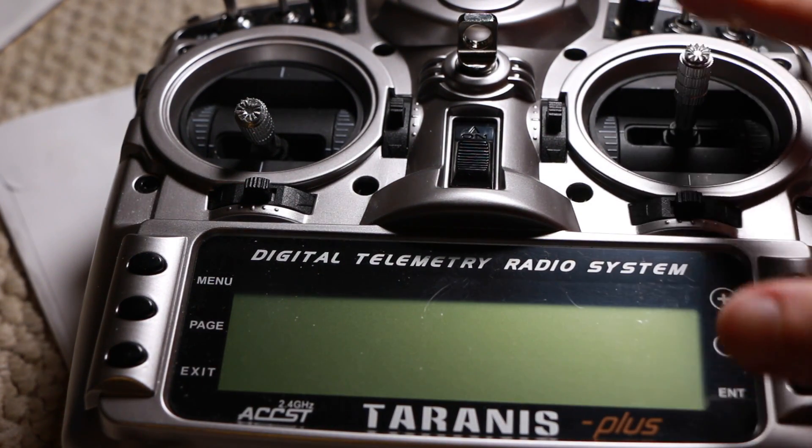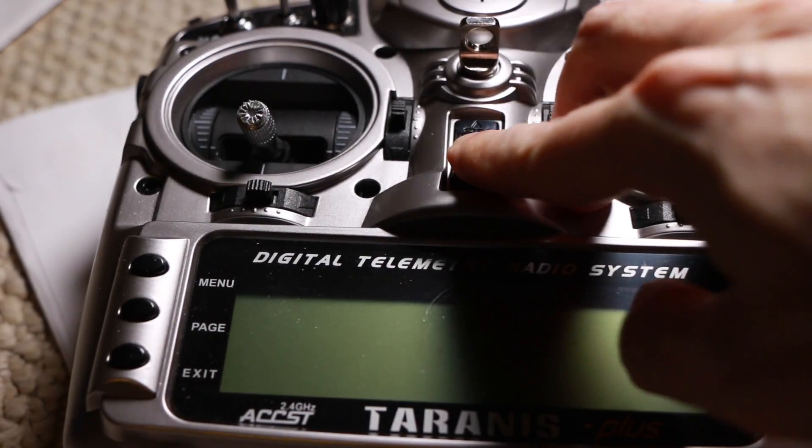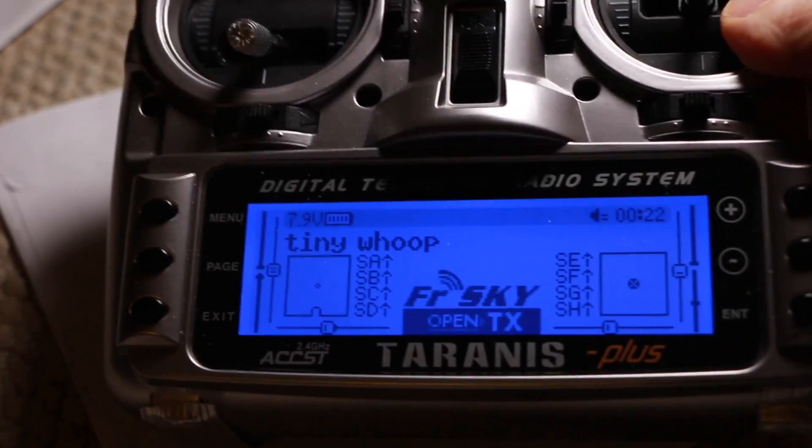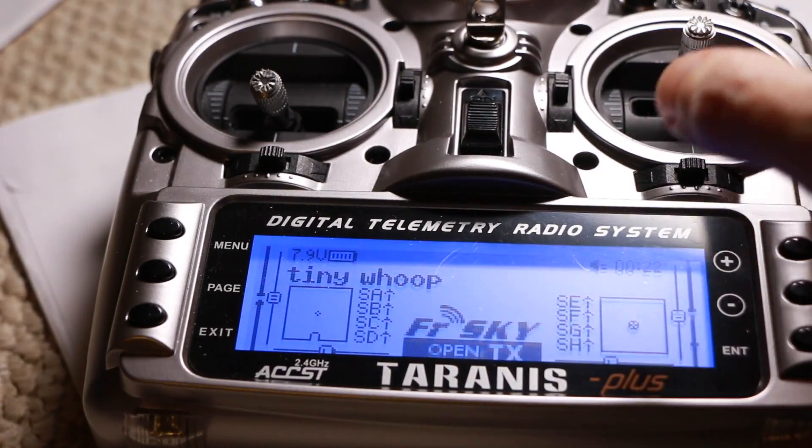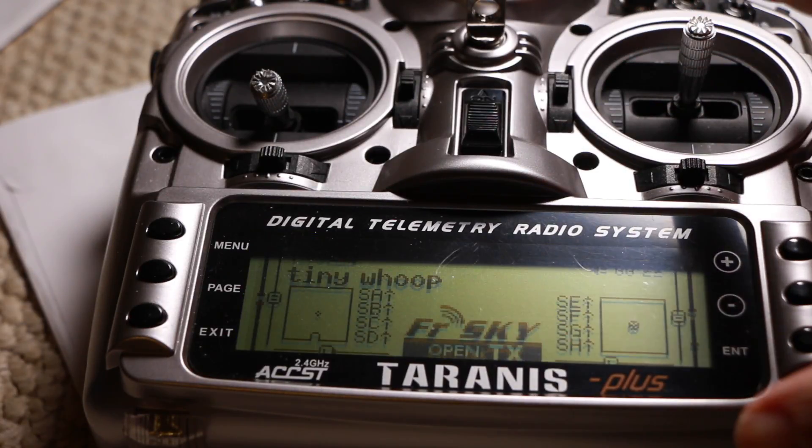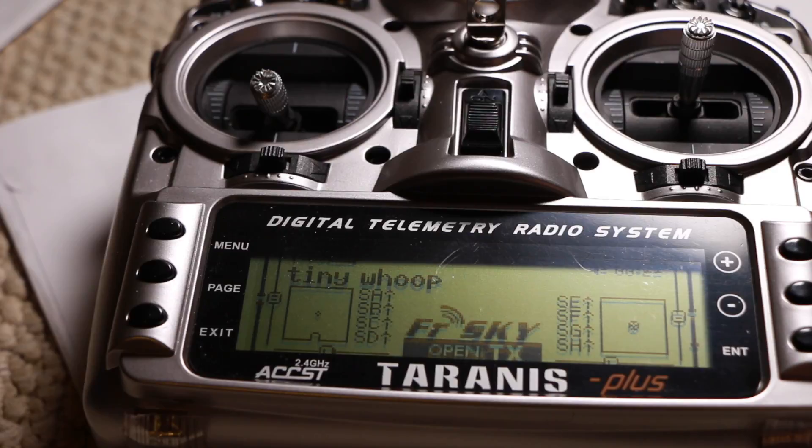However, this can be used for any FreeSky receiver that you build into any drones that you go ahead and make in the future. So it's completely customizable. Don't be too proud of this technological terror you've constructed. And I got my little Darth Vader thing that talks when I turn it on. A lot of configuration on here. The videos where you do the build completely explain how to set up the Tyrannis. I used Jesse's video. He's the tiny whoop guy and he shows us how to configure this radio. So that's done.